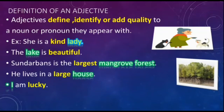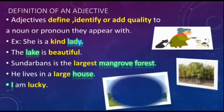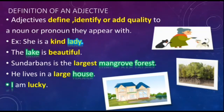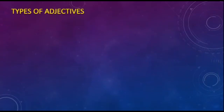'Sundarbans is the largest mangrove forest' — here the mangrove forest has been described as the largest. 'He lives in a large house' — here the house has been described as large. 'I am lucky' — here 'I' has been described as being lucky. Adjectives either come before a noun or sometimes after a noun.